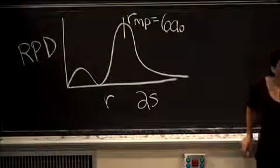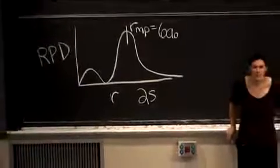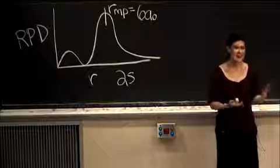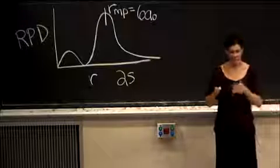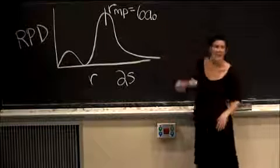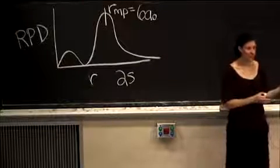When we think about what it is that this radial probability distribution is telling us, it's telling us that it is most likely that an electron in a 2s orbital of hydrogen is six times further away from the nucleus than it is in a 1s orbital.